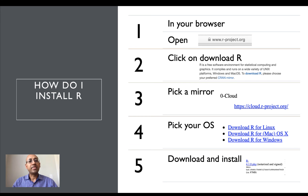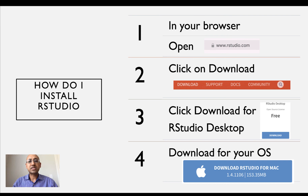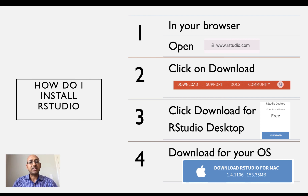Once you have installed R, the next step is to install R Studio. To install R Studio, open your browser to www.rstudio.com and click on the download icon in the top right menu bar. You will be directed to a page with several different versions of R Studio. Click on download for R Studio Desktop, which is the free version. Download the version corresponding to your operating system, then install it by following the default instructions provided in the installation package.